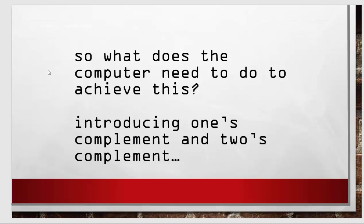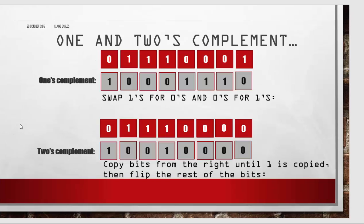The computer needs to do the two's complement to deal with negatives. One's complement would be to switch all the ones and zeros. Two's complement is different: they copy the bits from the right until one is copied, and then flip the rest. So all of these remain the same including that one, and then everything else is flipped.